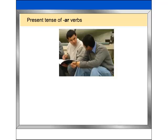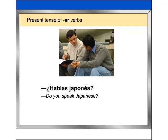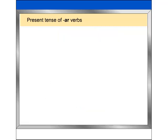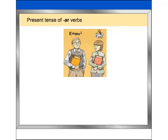Now look at the following dialogue: ¿Hablas japonés? No, no hablo japonés. Did you notice anything special about the subject pronouns? You may have realized that the Spanish sentences don't have any. In Spanish, the subject pronouns can usually be omitted since the subject is indicated by verb endings. Subject pronouns are used, however, for clarification.